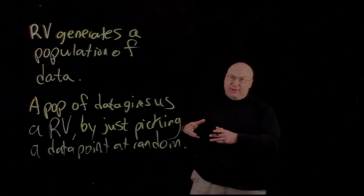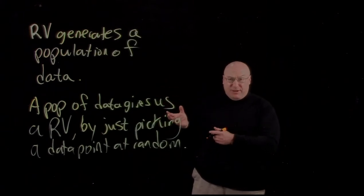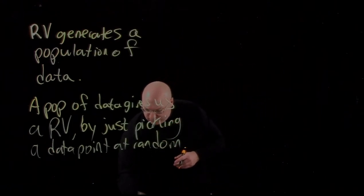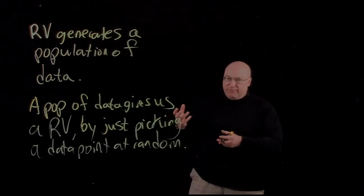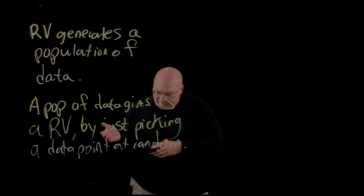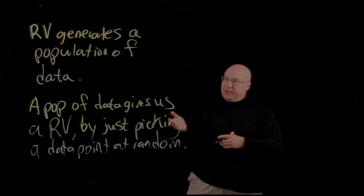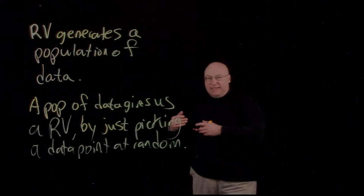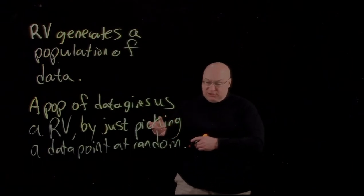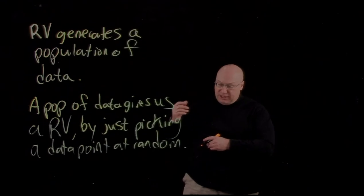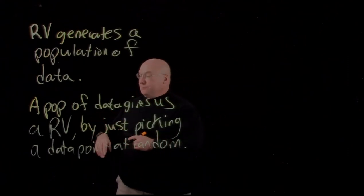There is a very real way in which the random variable encapsulates the entire population of data that it could generate. And also, this huge population of data, by just having the experiment be that you reach in and grab a number, it generates a random variable. So it's very natural to think of the population of data and the corresponding random variable as being sort of parallel. It's natural then to call the expected value of the random variable — which we did last time — its mean, since it was calculated the same way we calculated the mean using a relative frequency chart. So it's very natural to talk about the mean mu of a random variable.